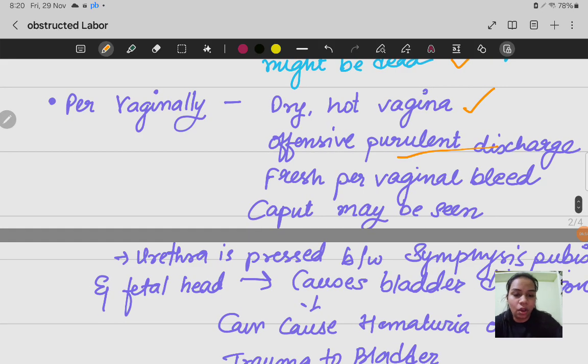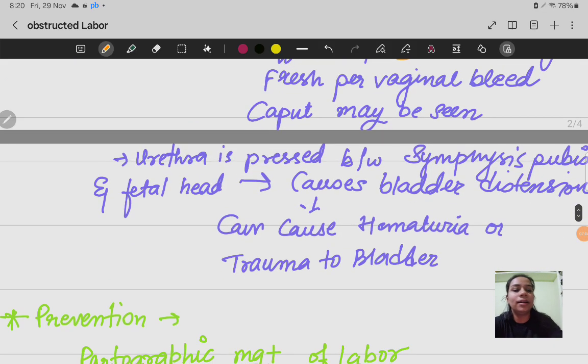One more thing is urethra is pressed. For a long time baby is inside obstructed, the urethra is pressed between the pubic symphysis and the fetal head, which will cause bladder distension.